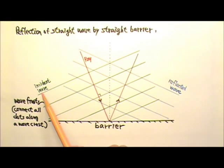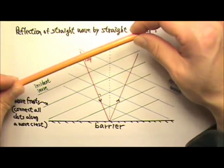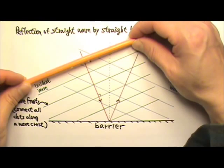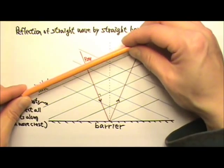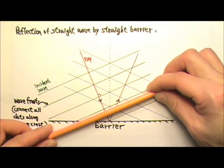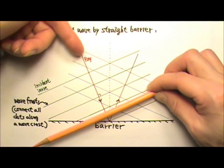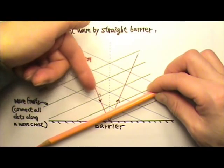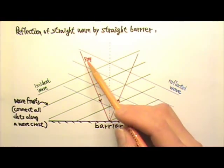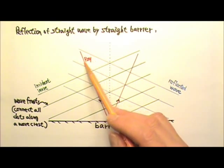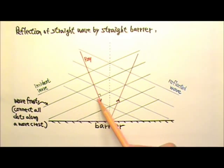We can draw two-dimensional waves by drawing their wave fronts. If we connect all dots along a wave crest, we get a wave front. In this case, we're looking at a straight incident wave. The dots on each crest form a straight line. The wave comes in like this. We can use this arrowed line to show the direction of wave motion. This arrowed line is called a ray. A ray is always perpendicular to the wave fronts.